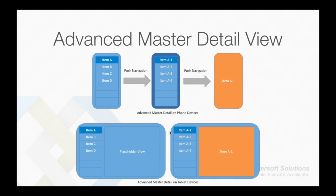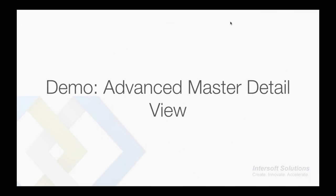In addition to navigation components, Crosslight 2 also supports a new advanced master detail view that allows you to specify two-level list navigation optimized for tablet experience, supporting both iOS and Android platforms. When you have a list of items and tap one, it will navigate within itself to display sub-items. Tapping again will navigate to the detail frame on the right-hand side. When implemented on phones, the advanced master detail view will simply perform deep push navigation from one list to another, then to the detail view.